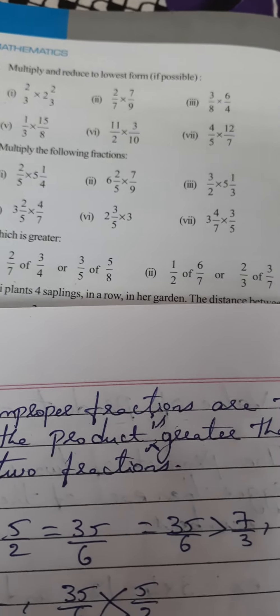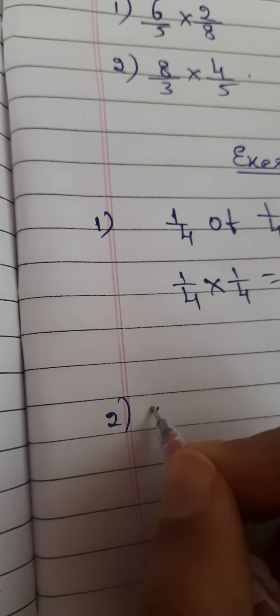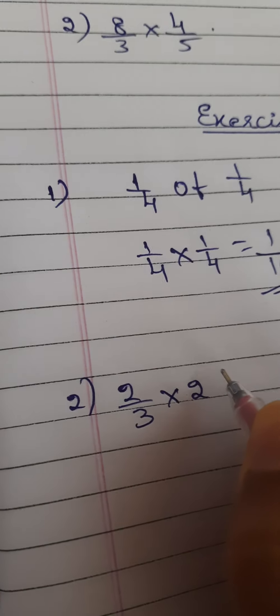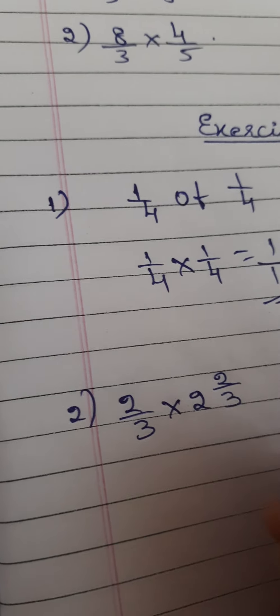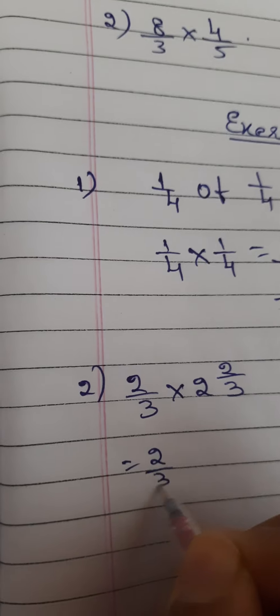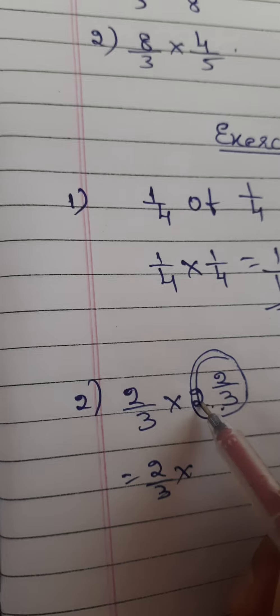Second one: 2/3 × 2 2/3. That is equal to 2/3 times... this is in which form? This is a mixed fraction. So what we have to do?